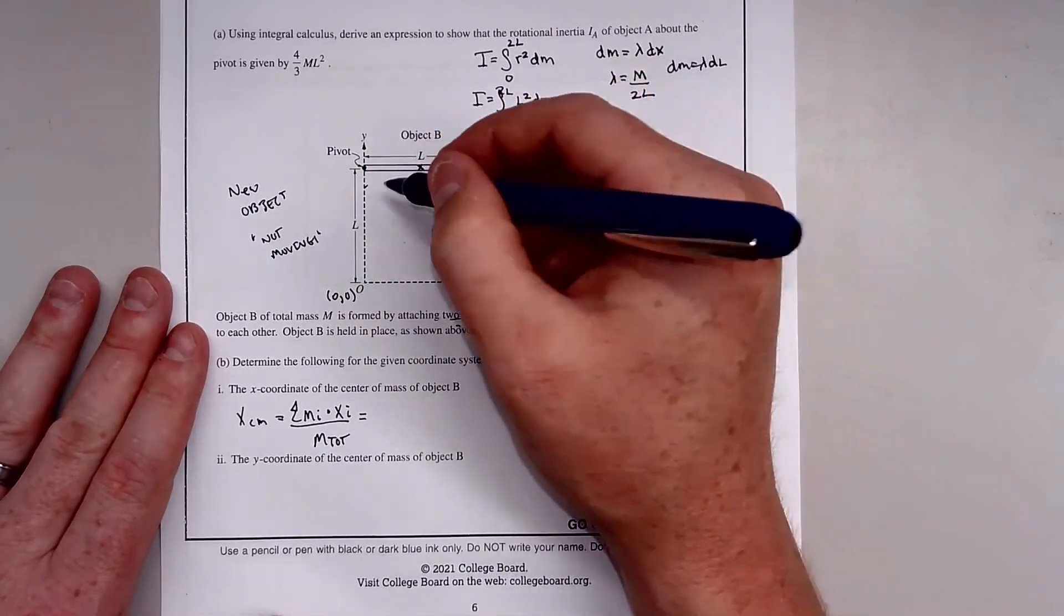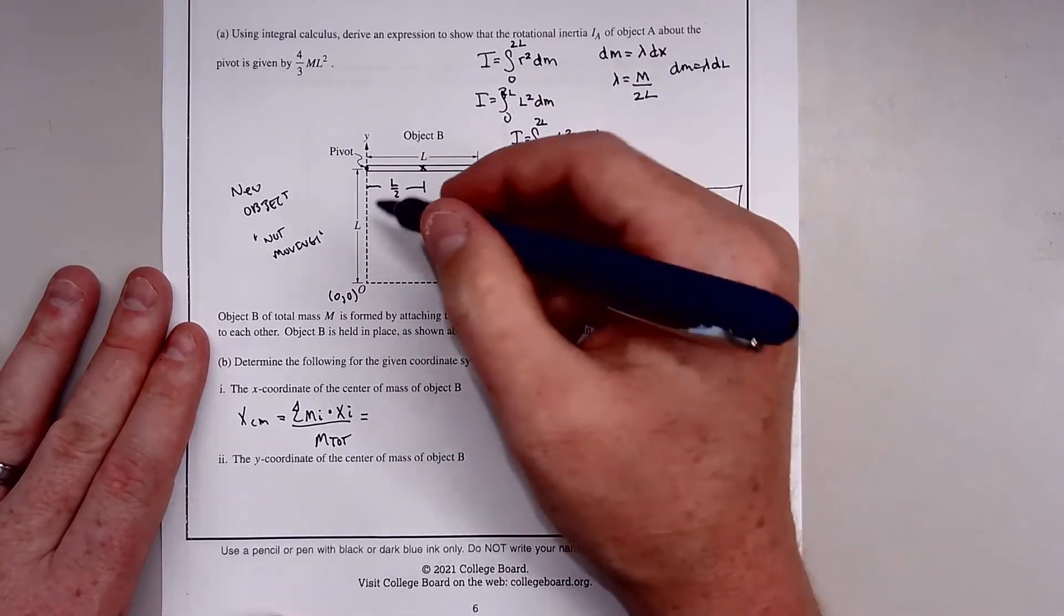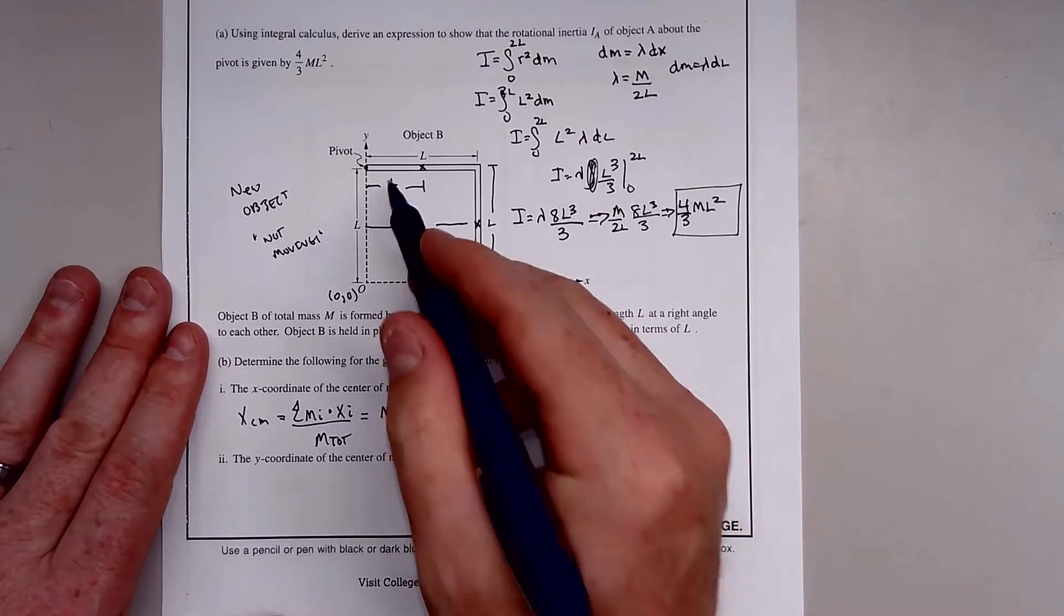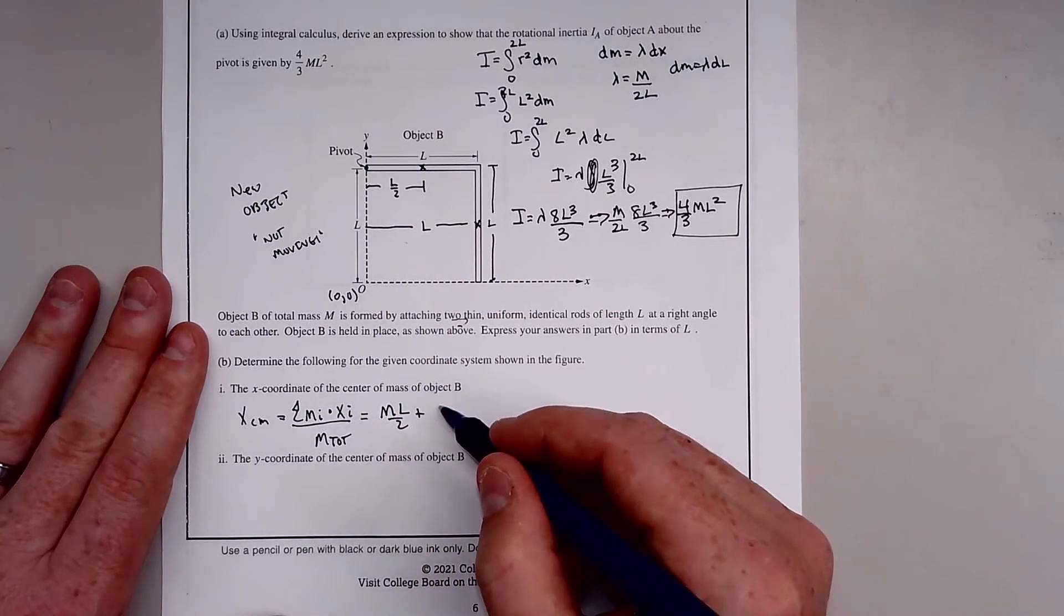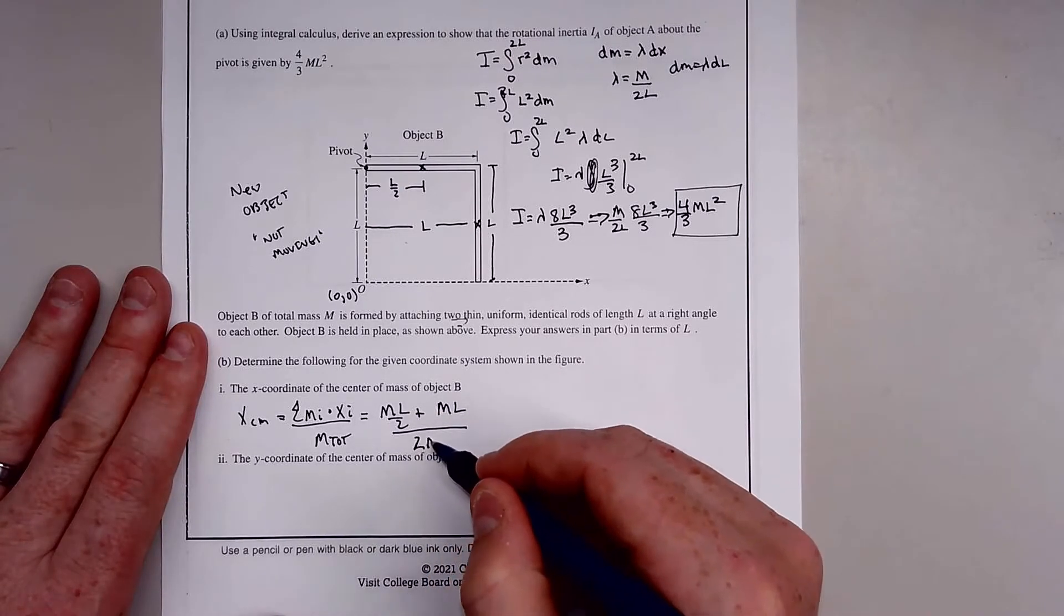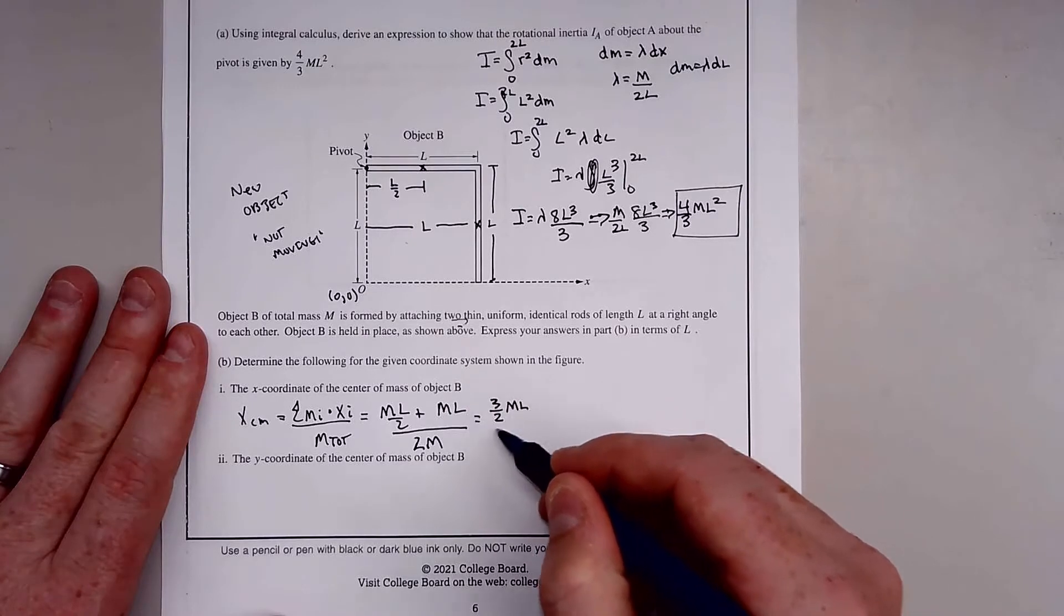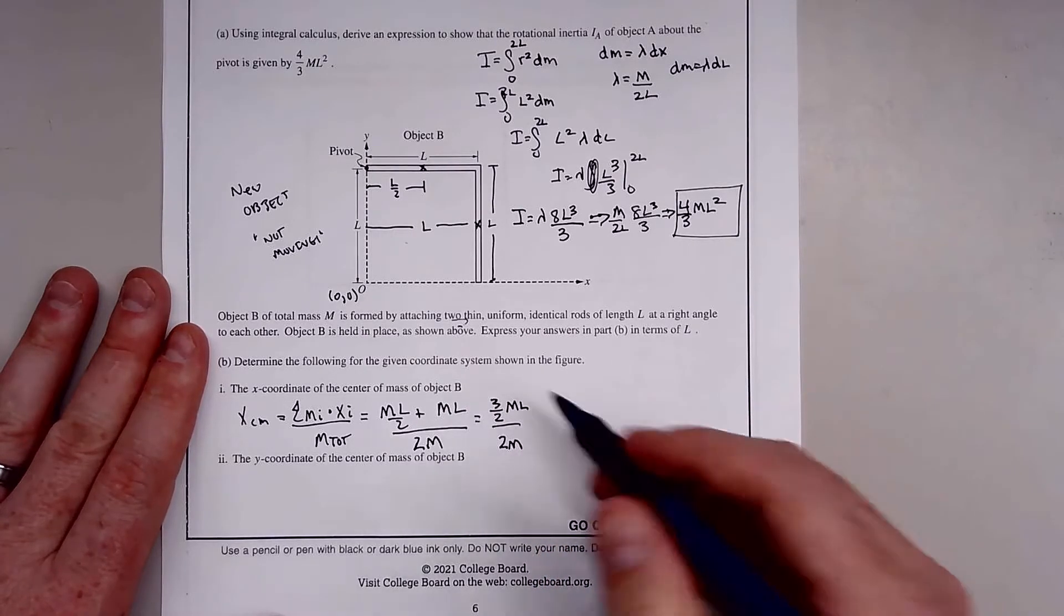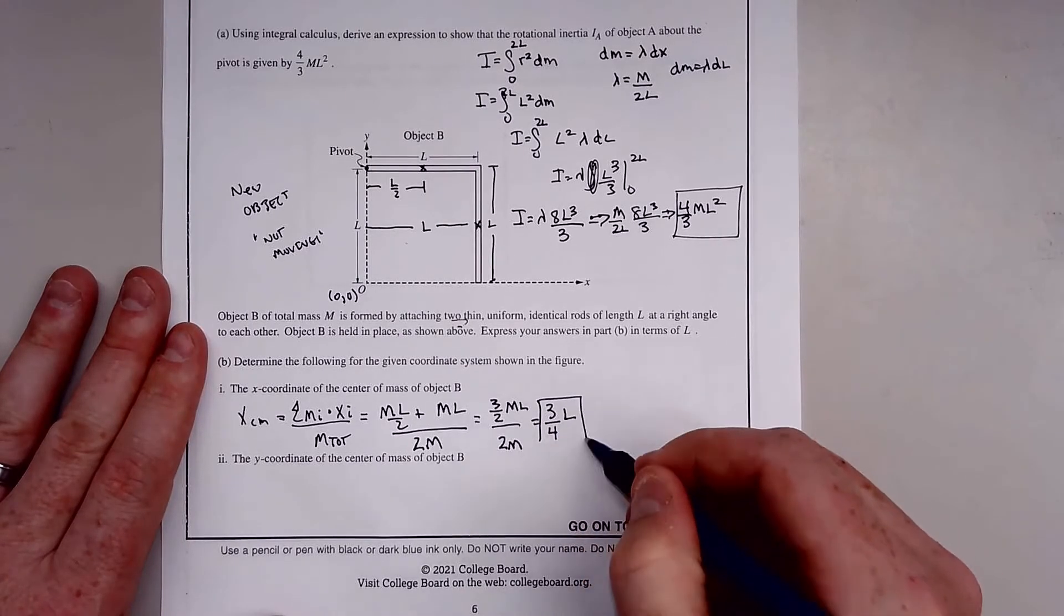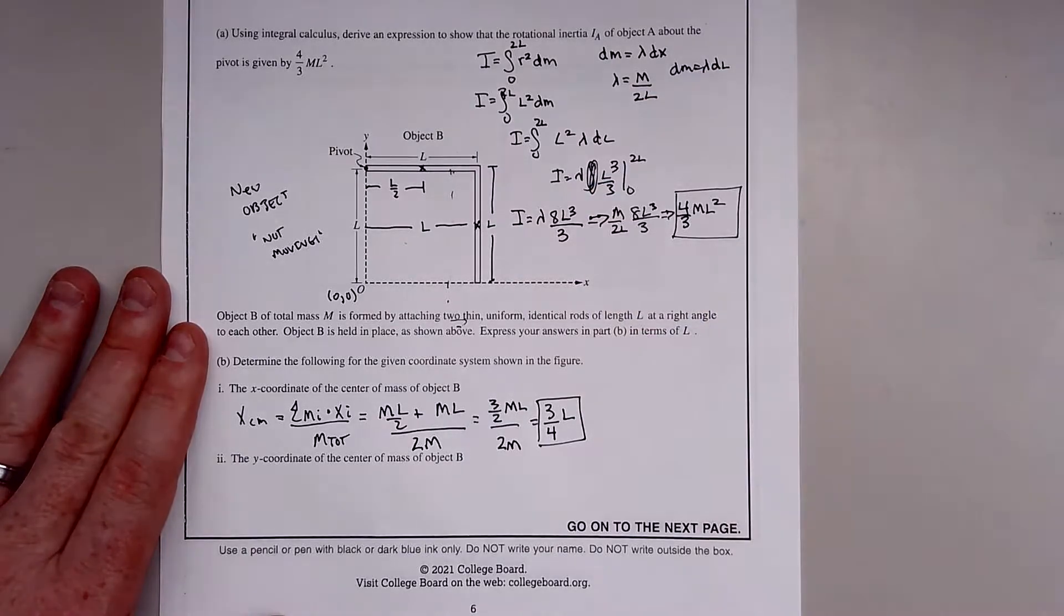The distance from here to the center of the horizontal rod is L over 2, and for the vertical rod it's straight up L. We have M times L/2 plus M times L, all over the total mass M plus M, which is 2M. That's 3/2 ML divided by 2M, which gives us 3/4 L.